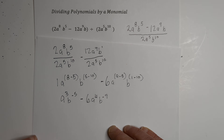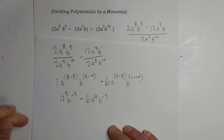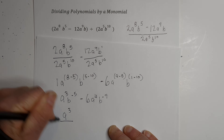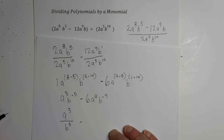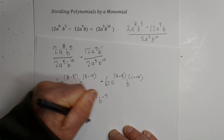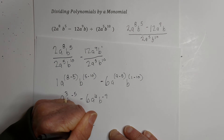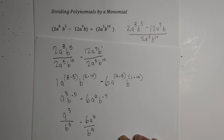We are not finished yet, because we don't want a negative exponent. So we're just going to write a cubed over b to the 5th, minus 6a to the 4th, and we're going to move the b to the bottom — b to the 9th. So there it is. I hope that was helpful. Thanks for watching, and remember, kindness multiplies kindness — be kind to someone today.